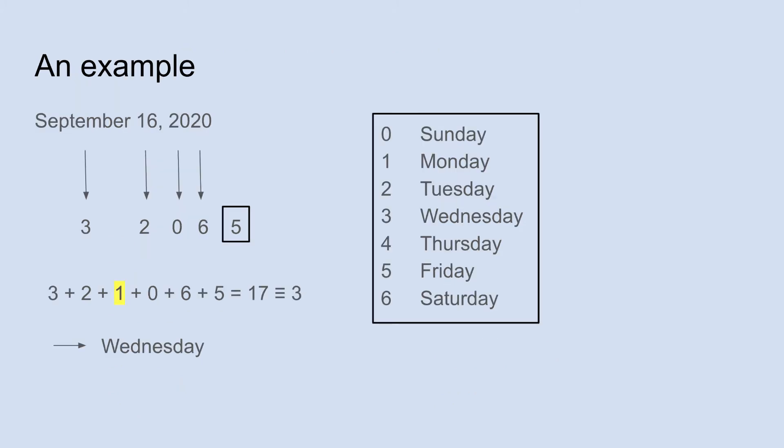Let's take a look at an example from this year: September 16, 2020. The task is to add up a bunch of numbers, and every part of the date gives us a number to add. September gives us 3 — we'll see the whole list of months and codes on the next slide. We could add 16, but it's a lot easier to add 16 mod 7, which is just 2, because 16 is 2 more than 14. So instead of adding 3 and 16, we can just add 3 and 2.